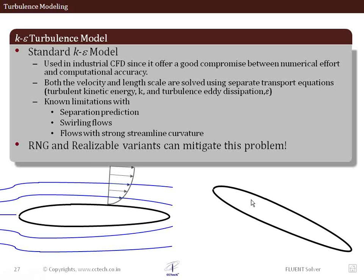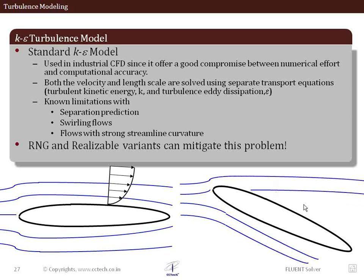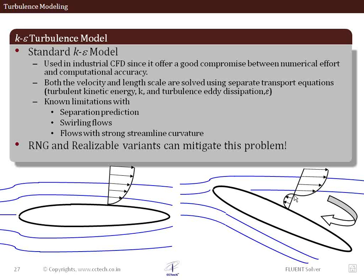But when it has to deal with curvilinear structures where there is no such velocity profile, you will see flow separation. There is a reverse flow occurring because of which there is flow separation, and in such cases — predicting such separations, swirling flows, or flows with strong streamline curvatures — the k-epsilon standard model fails. Therefore the RNG and realizable variants come to the rescue, as they can take care of a variable eddy viscosity inside the domain.